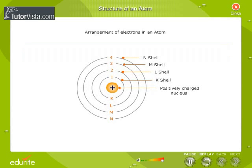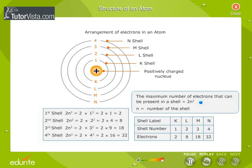The maximum number of electrons that can be present in a shell is given by the 2N square rule where N is the number of the shell. The filling up of electrons in different shells follows the 2N square rule and may be understood from the table shown here.